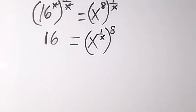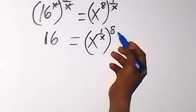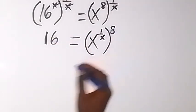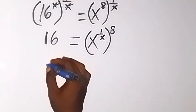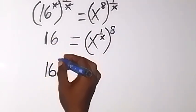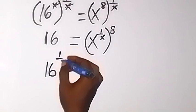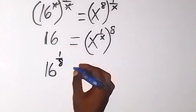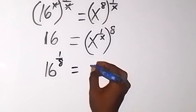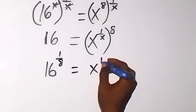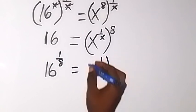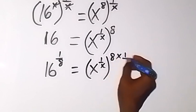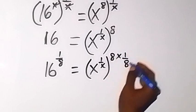And from here, to remove this 8, we can multiply both exponents by 1 over 8. So I can say this is 16 raised to power 1 over 8. Then, also on this side, x raised to power 1 over x, raised to power 8 times 1 over 8.